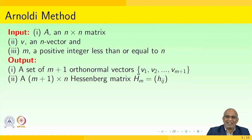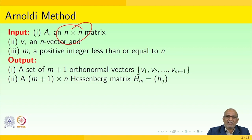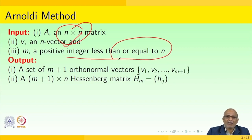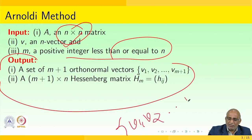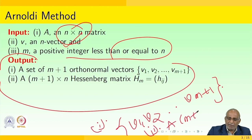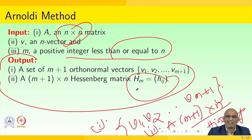The algorithm is quite interesting. The input is as follows: you start with a square n×n matrix, a vector of size n, and m, a positive integer less than or equal to n. The output you expect is a set of m+1 orthonormal vectors V1, V2, ..., V(m+1), and an (m+1)×n upper Hessenberg matrix, denoted H_m, where H_m = [h_ij].